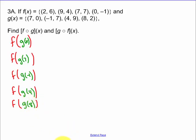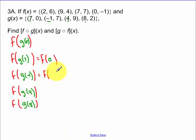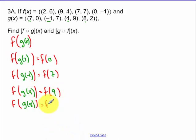So I'm looking at g of 7, g of negative 1, g of 4, and g of 8 — those were all of the x values from the g of x function. Now I evaluate g of x for those: g of 7 equals 0, g of negative 1 equals 7, g of 4 equals 9, and g of 8 equals 2.